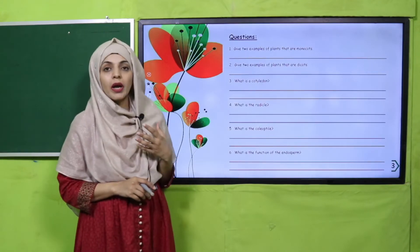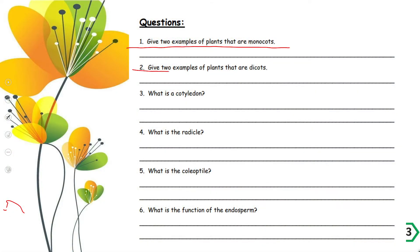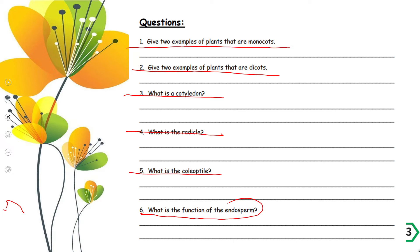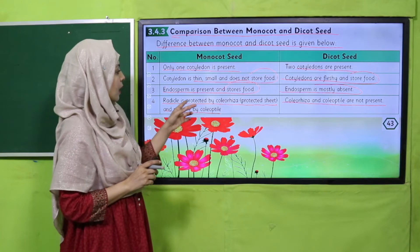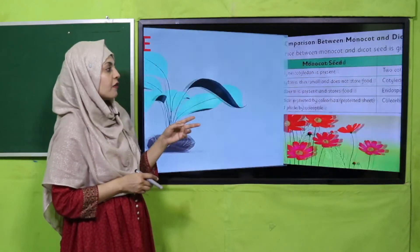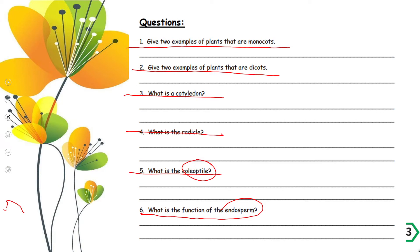Questions in the worksheet: Give two examples of plants that are monocots — maize and corn. Give two examples of dicots — chickpeas, peas, and red beans. What is a cotyledon? These are seed leaves present inside the seed. What is the radicle? It is the part of the embryo that develops into roots. What is the coleoptile? It is the protective covering of the plumule, which develops into the stem. What is the function of endosperm? It stores food in monocot seeds.